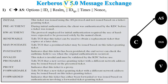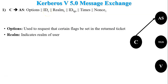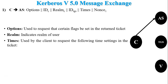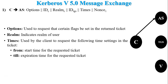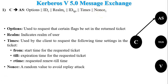The second value of the message is IDC, which indicates the identity of the client. The third one is RealmC, which indicates the realm of the user — meaning the realm of the client. The fourth one is IDTGS, which indicates the ID of the ticket granting server. The client sends IDTGS to the authentication server because the client wants to request a ticket for the TGS from the authentication server. The next one is times, used by the client to request time settings in the ticket: from (start time), till (expiration time), and rtime (requested renew-till time). The last one is nonce, a random value to avoid replay attacks.